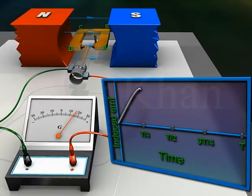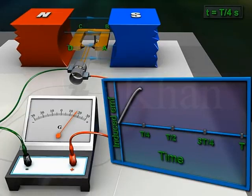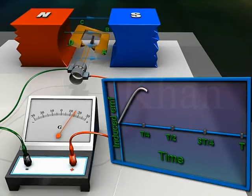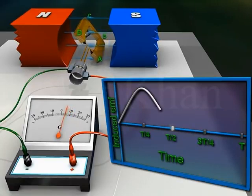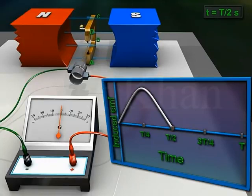During the first quarter rotation, the induced EMF increases. Then at time t/4 seconds, the armature becomes horizontal — at this position the rate of change of magnetic flux momentarily attains the maximum value, therefore the induced EMF is maximum. During the second quarter rotation, the induced EMF decreases. Then at time t/2, the armature again becomes vertical and the induced EMF is 0.